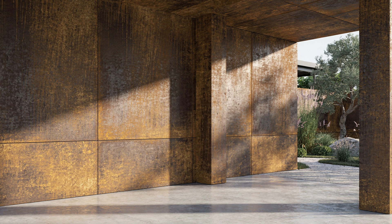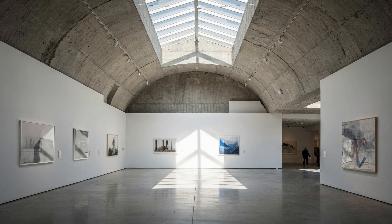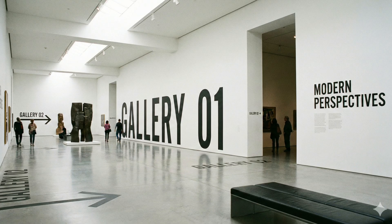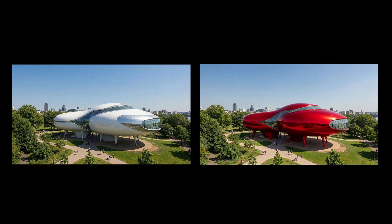It builds on the already impressive high-definition capabilities of Flux 1 but takes things even further. Now you get a much deeper understanding of spatial lighting and logic, even greater detail, higher megapixel output, and a big one — size control using JSON-based inputs. Some of the standout new features include advanced text comprehension, the ability to use up to 10 reference images in a single prompt, and exact color control with hex codes.